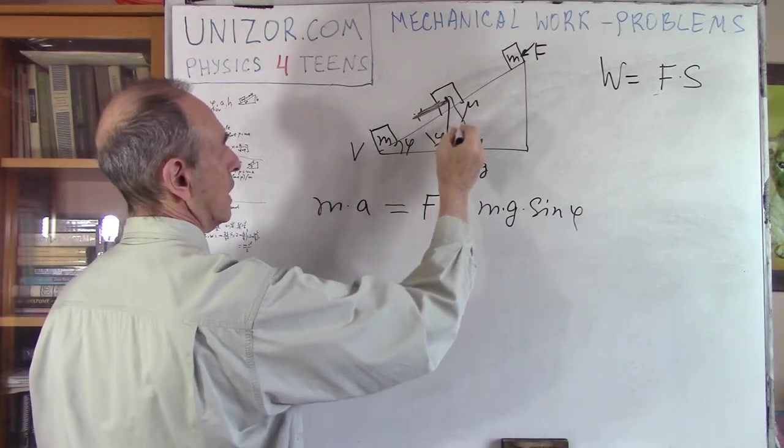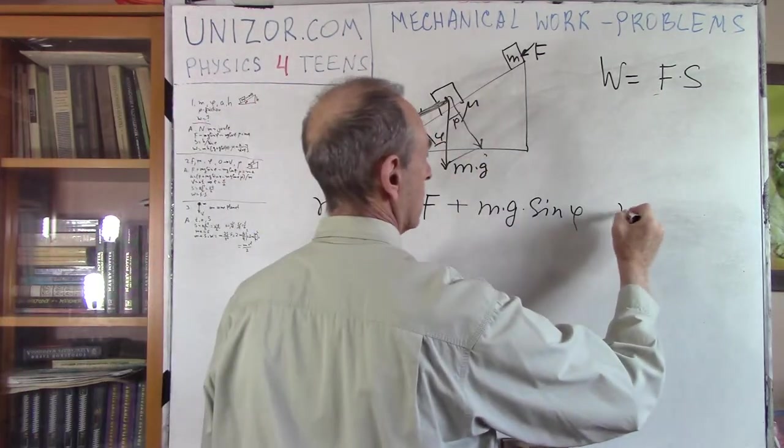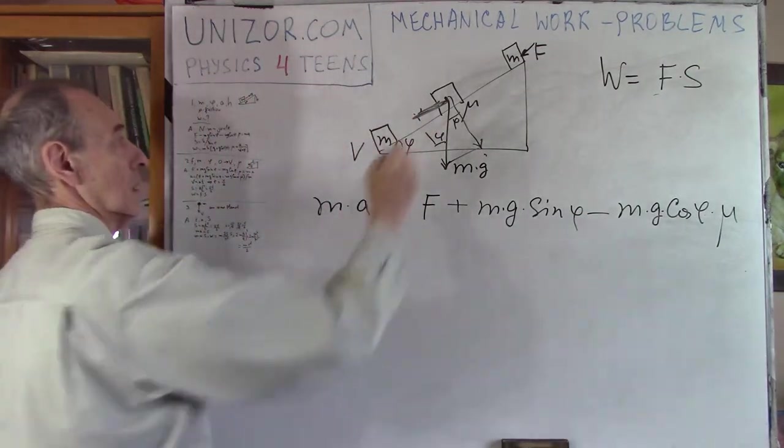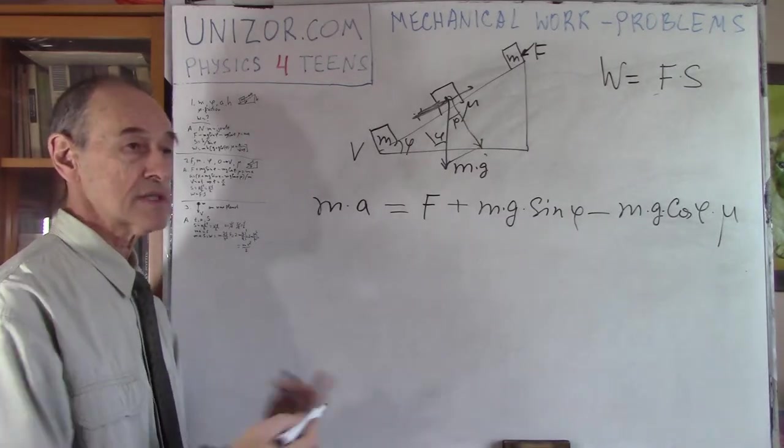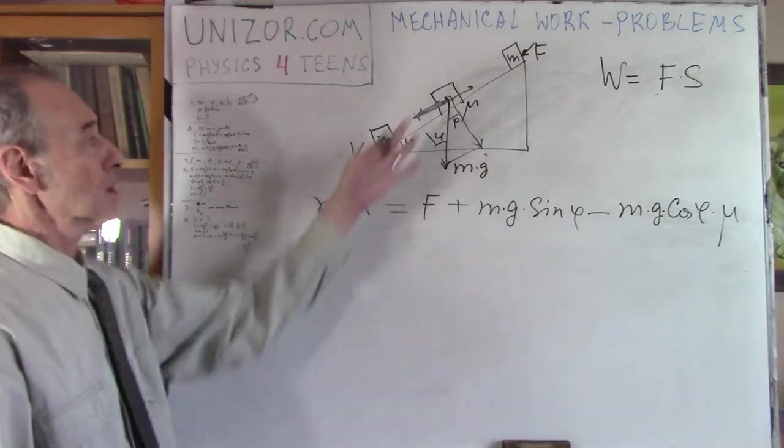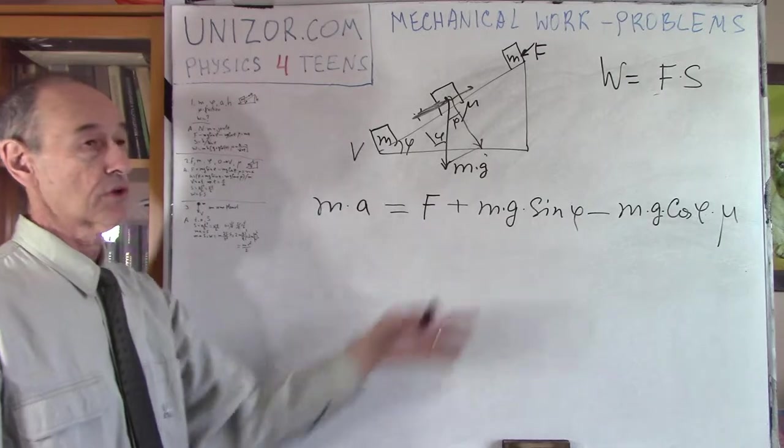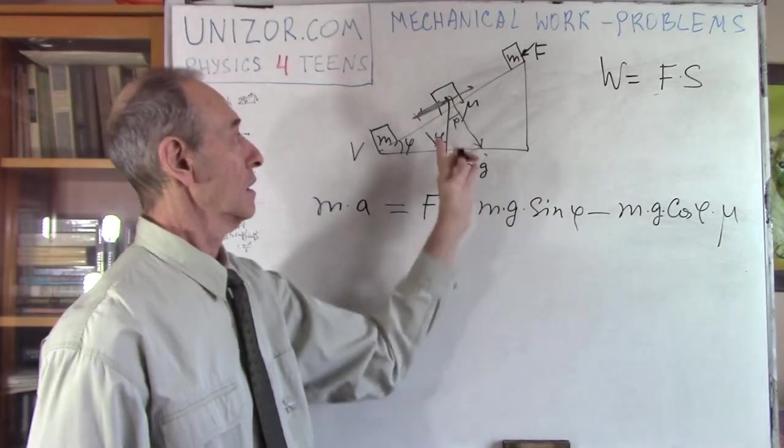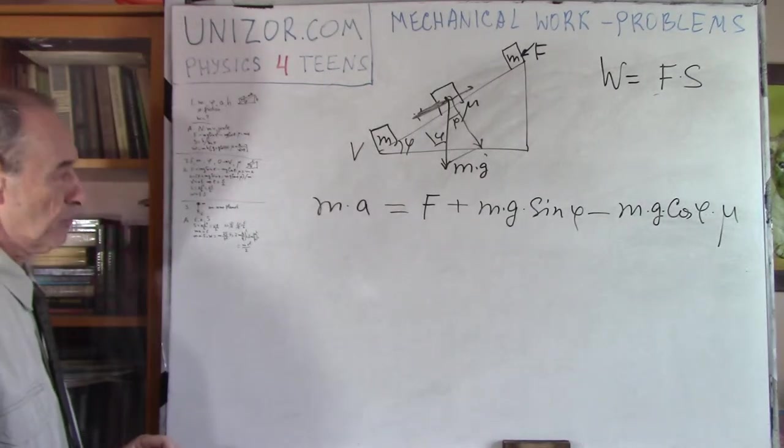Now, this component of the weight actually helps us because it also directed down and we are moving our object down the slope. So, I have to add m times g times sine phi. Right? Because this is also angle phi and this is angle phi. Now, the friction, which is a combination of m g cosine phi and mu, is definitely preventing us. It directed this way. So, this is an equation which is very similar to the one which was before in the first problem. The only difference is I have plus here instead of minus because we are moving down and not up.